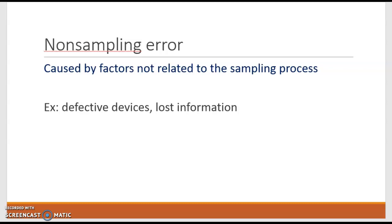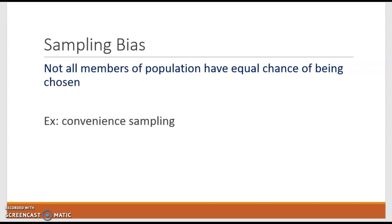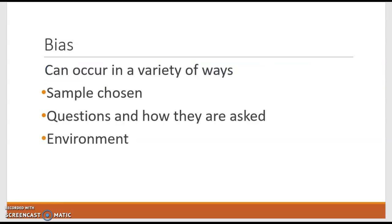Now we have what we call sampling bias. Sampling bias is when not all members of the population have an equal chance of being chosen. Convenience sampling is an example of this. Again, if I'm hanging out at the baseball stadium asking questions of people going by there, not all members have an equal chance of being chosen because not everybody is going to hang out at a baseball stadium on a random evening. Convenience sampling is where you go when it's easy for you, not where you get the best representation of people.